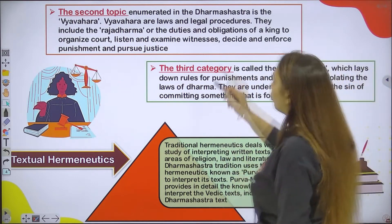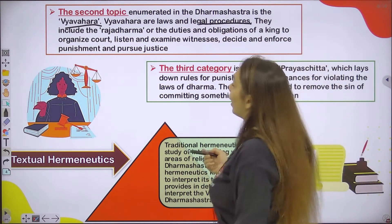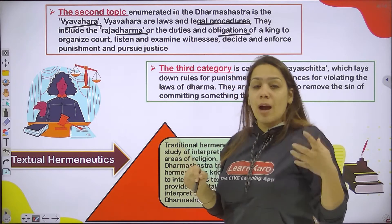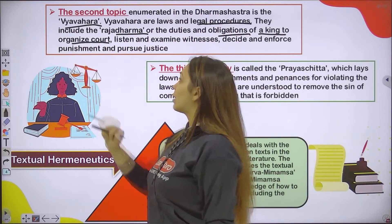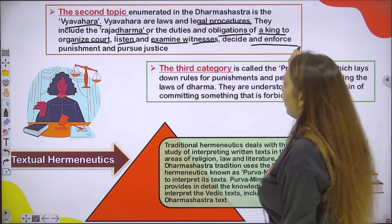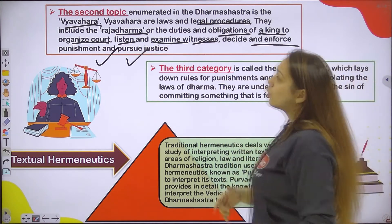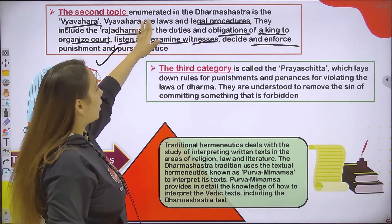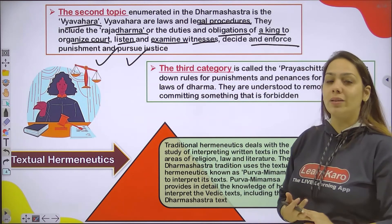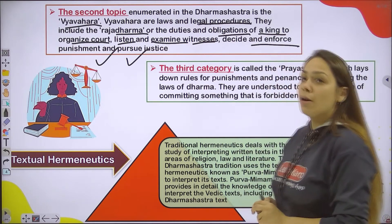The second topic included in Dharm Shastra is Vyavar. Vyavar is about behavior — laws and legal procedures. They include Raj Dharm, meaning the duties and obligations of a king. Obligations are things one is morally bound to do. Vyavar covers how to organize the court, how to listen, how to examine, how to get justice, and what punishments apply.